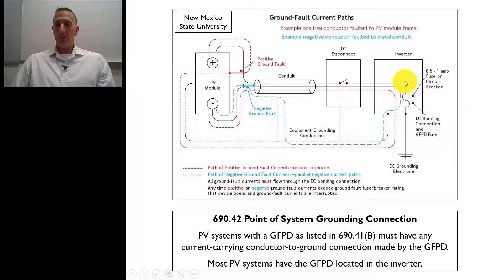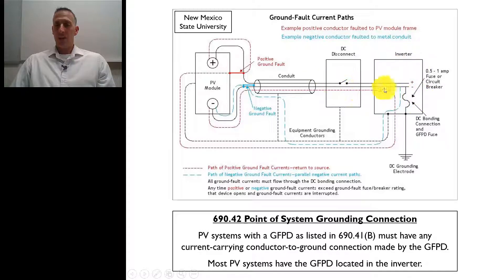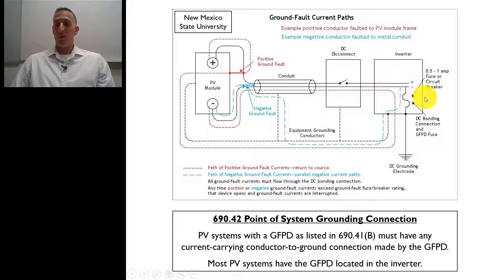When enough electrons flow through right here, when it flows through that fuse and it blows that fuse, the inverter shuts down, electrons stop flowing, and the system will disconnect — the system won't be operating anymore, and it'll let you know there's a ground fault.